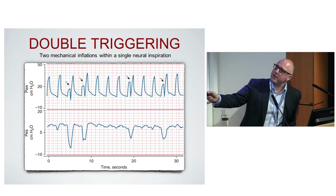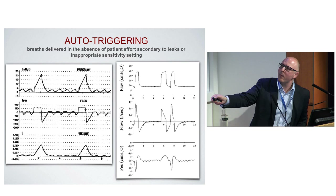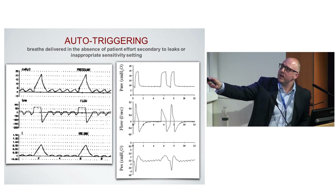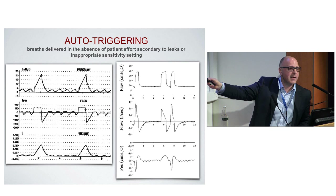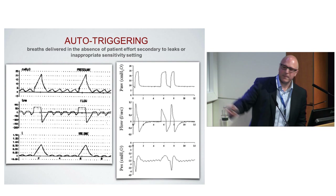This is auto-triggering. On the left-hand side you can see a little atrial fibrillation-like pattern. But this time the pressure, instead of going down as in an ineffective trigger, goes up. These two breaths look very different: one has no negative pressure and one has negative pressure. If there is negative pressure, it is properly patient-triggered. Without negative pressure, it is an auto-triggered breath — the ventilator receiving some noise and triggering a breath whether the patient wants it or not.